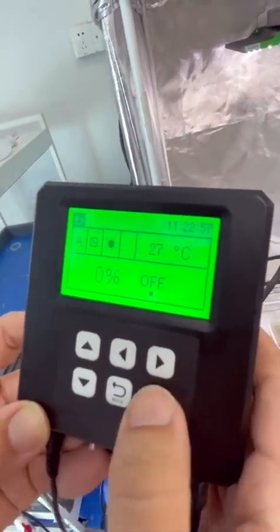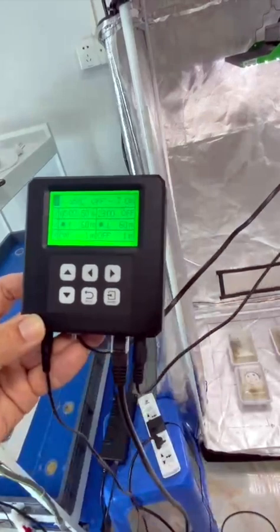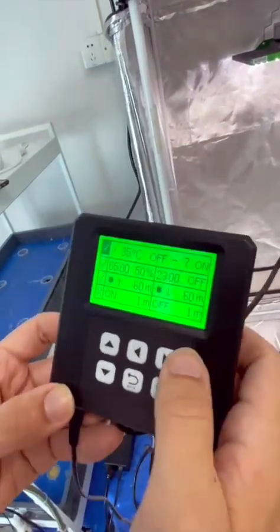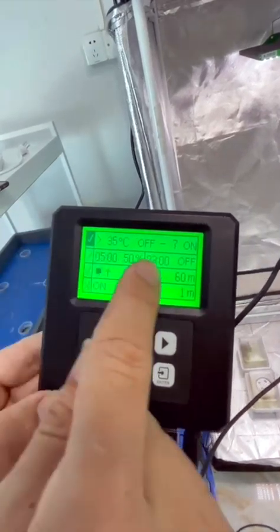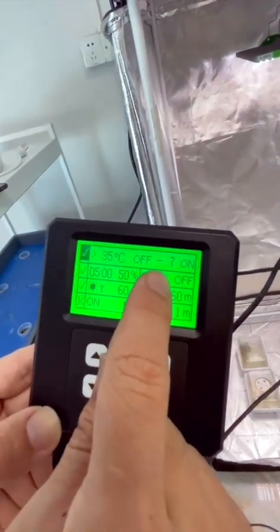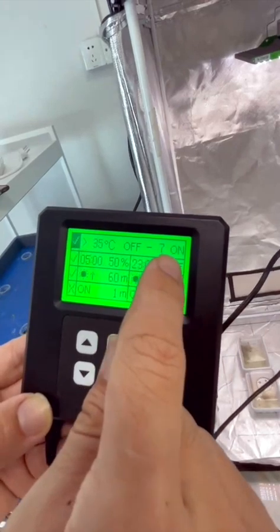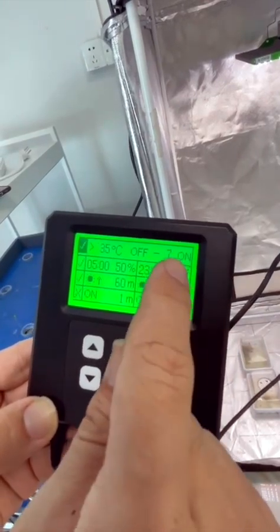When the temperature is higher than 35 degrees Celsius, it will decrease the power to 5%, and then return to normal power when it is lower than 28 degrees Celsius.